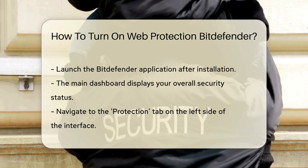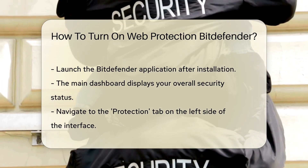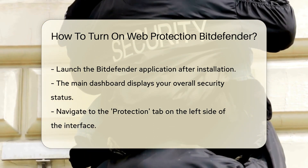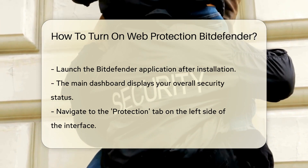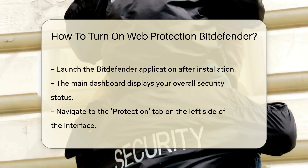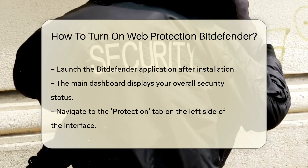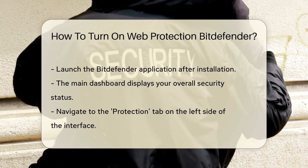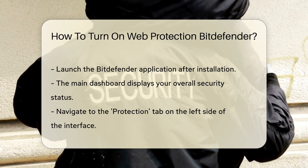Within the Protection tab, locate the Web Protection option. This feature is designed to block harmful websites and prevent phishing attacks. To activate it, simply toggle the switch to the On position.